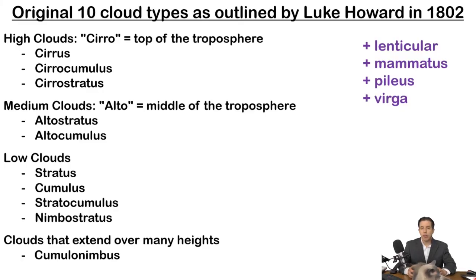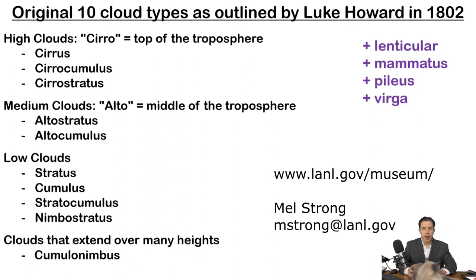That's everything you need to get started cloud watching. We've got the ten original cloud types plus four extras. In New Mexico, we typically see all of these clouds in the summer, except for cirrostratus, altostratus, and nimbostratus — for those you need to wait until winter, and you might see nimbostratus maybe once a year. If you want to practice your clouds, go to the Bradbury Science Museum's webpage — we have a PDF of cloud flashcards with pictures of clouds for you to practice identification with answers. I'm Mel Strong. Thanks for watching.